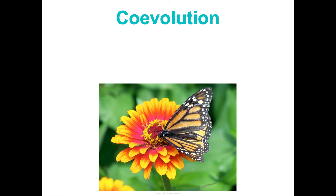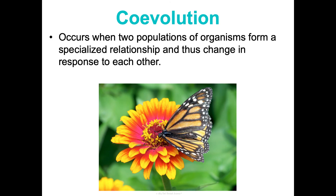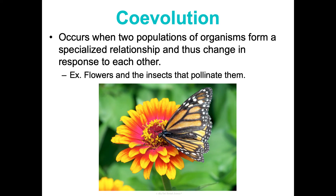My favorite example is co-evolution — 'co' meaning together. This is when two populations of organisms form a specialized relationship and evolve in response to each other. Flowers and the insects that pollinate them rely on each other, so as one has evolved, the other has too in order to survive. We're going to watch a video called the Evolutionary Arms Race, which has an excellent example of this. That's a brief overview of Patterns of Evolution.